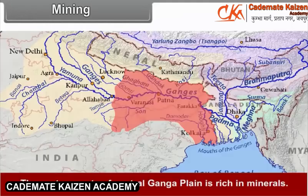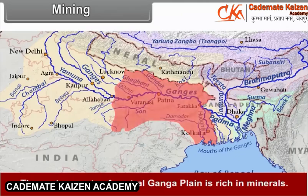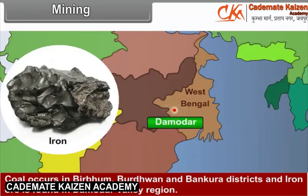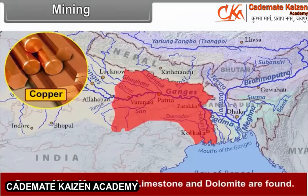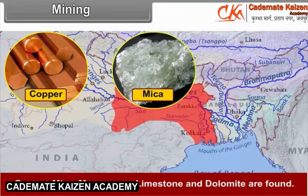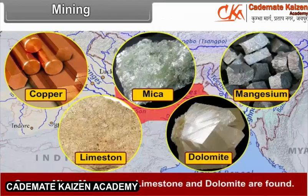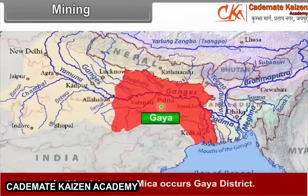Mining. The eastern part of the central Ganga Plain is rich in minerals. Coal occurs in Dhanbad, Burdwan and Bankura districts, and iron ore is found in the Damodar Valley region. Copper, mica, manganese, limestone and dolomite are also found. Some mica occurs in Gaya district.